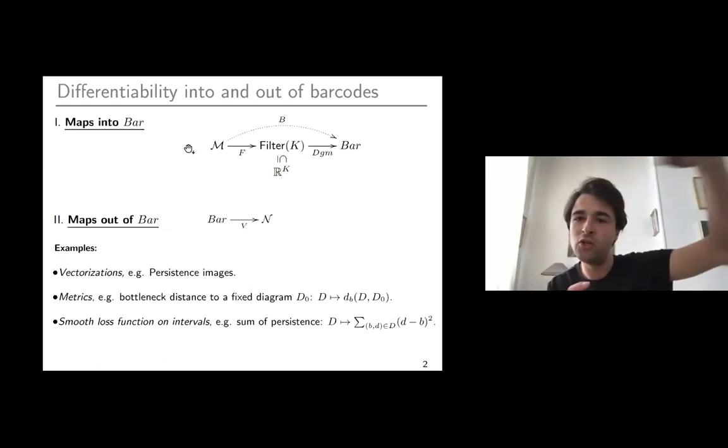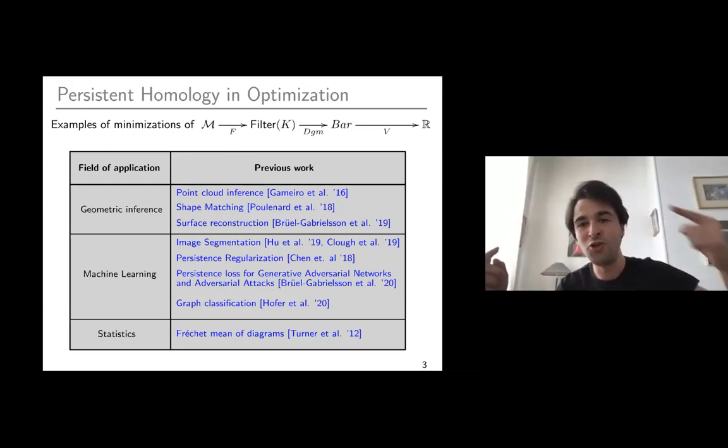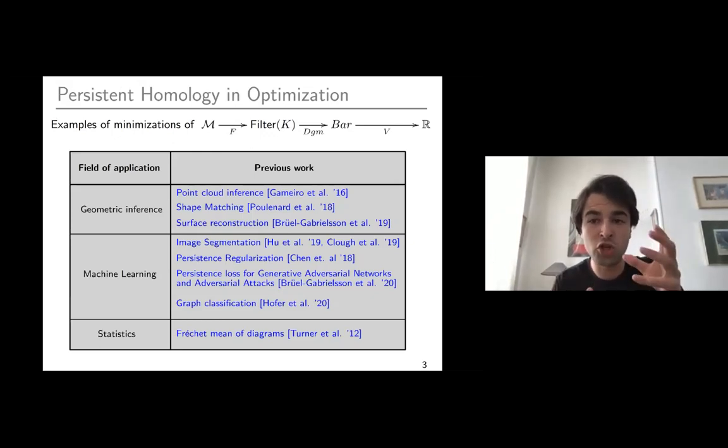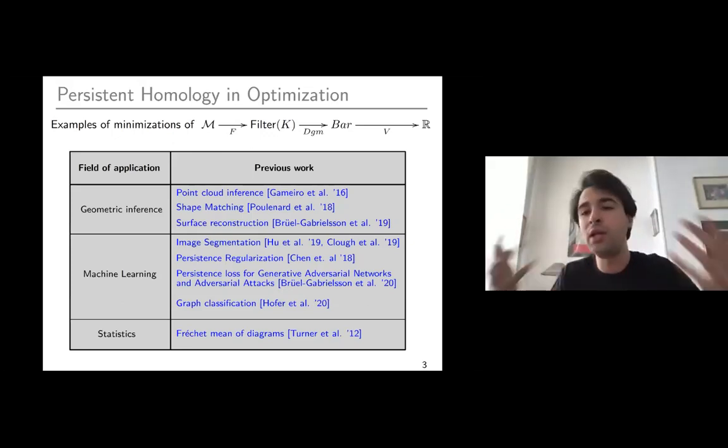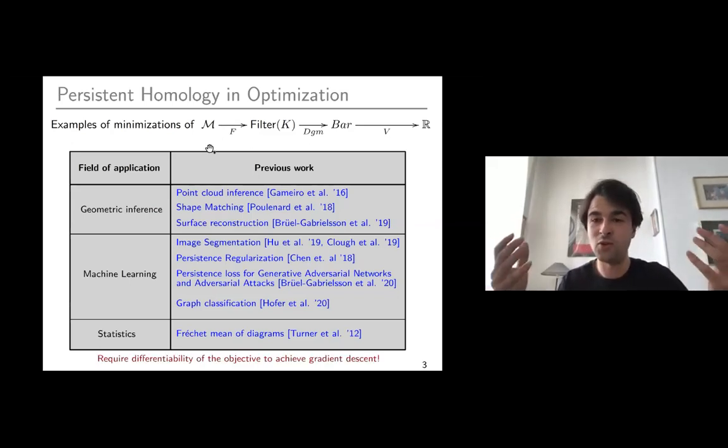If you combine these two parts, into barcodes and out of barcodes, you can get objective functions. You start from a manifold, you land into the real line, and you're going through barcodes. This objective function you want to minimize in optimization. By implementing the choice of manifold parameter, parametrization, vectorization, there are various very interesting applications of this idea of merging persistent homology and optimization. There are geometric inference applications, a lot in machine learning also, and in statistics. In all these cases, you need the differentiability of the composites so as to achieve minimization via gradient descent, this unavoidable paradigm of today's optimization.